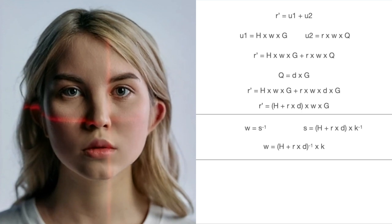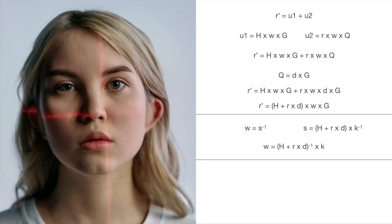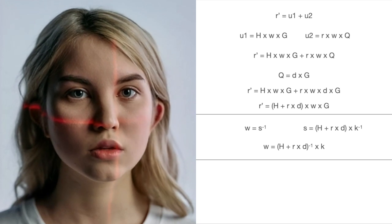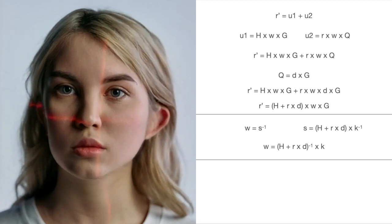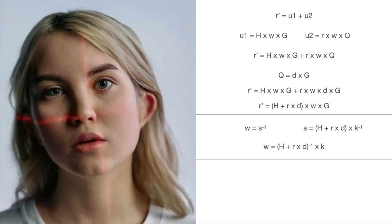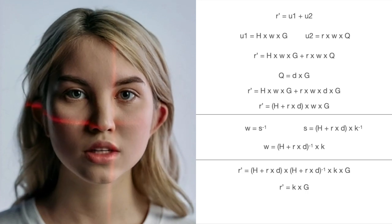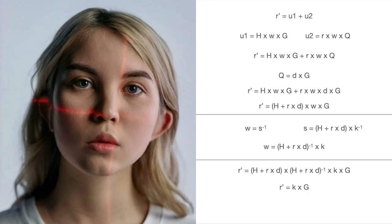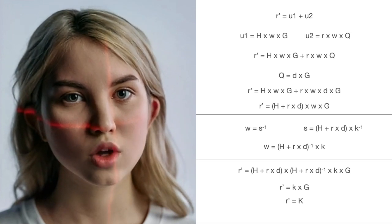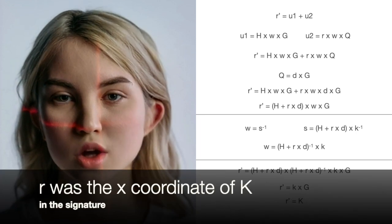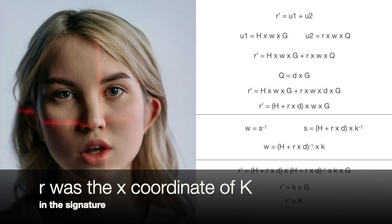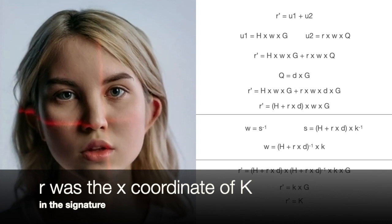Now expand W — it was the multiplicative inverse of S. And S is equal to hash plus R times private key D, times the multiplicative inverse of random key k. So W can be represented as the multiplicative inverse of hash plus R times private key, times random key k. If we replace the W calculation in the R prime calculation, R prime becomes random key k times base point G, which equals random point K. On the other hand, R in the signature was the x-coordinate of random point K, and we are comparing the x-coordinate of R prime and R itself in the verification.